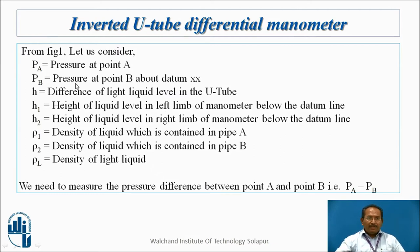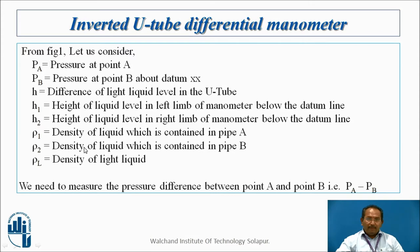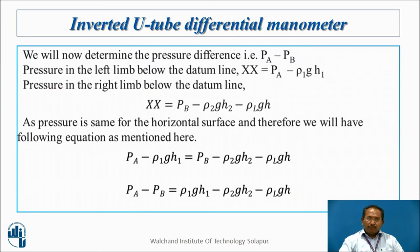From the figure: Pa is the pressure at point A, Pb is the pressure at point B, H is the difference of light liquid level, H1 and H2 are the heights of the liquid above the datum line from pipes A and B respectively, and rho1, rho2, and rho are the densities of the liquid in pipe A, pipe B, and the manometric light liquid. We need to calculate the pressure difference Pa minus Pb by equating the pressures.